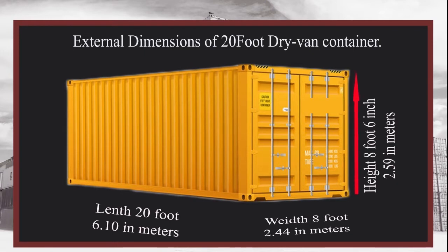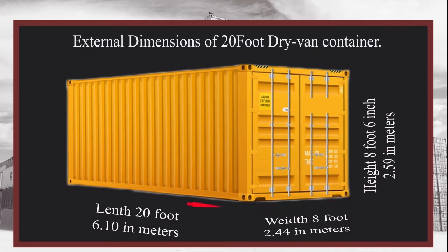External dimensions of the 20 foot dry van container: height 8 foot and 6 inches, 2.59 meters; width 8 foot, 2.44 meters; length 20 foot, 6.10 meters.